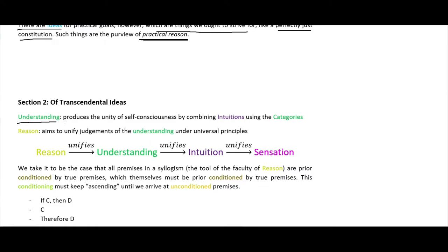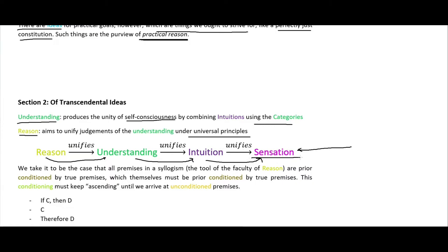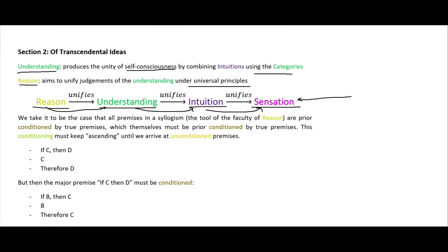Regarding the transcendental ideas: the understanding produces the unity of self-consciousness by combining intuitions using the categories, and then reason aims to unify judgments of the understanding under universal principles. I came up with this little schema: reason unifies understanding, understanding unifies intuition, and intuition unifies sensation. Sense data comes in, gets unified into intuition in the form of space and time, that raw intuition gets structured by the concepts of the understanding, and then those concepts get unified by reason.